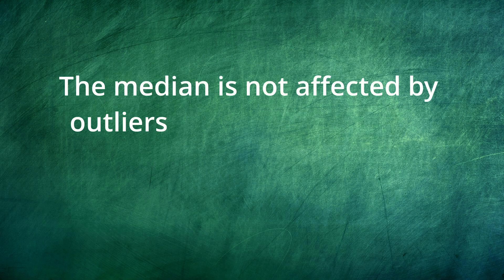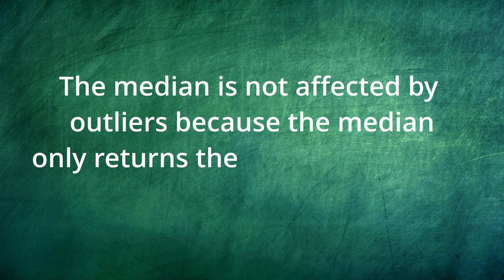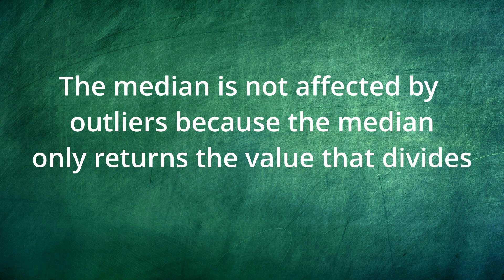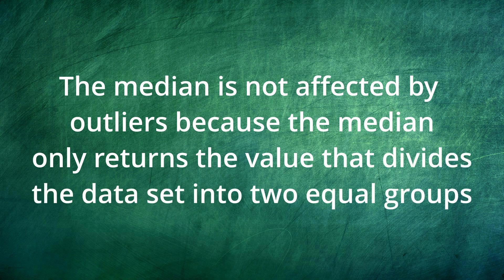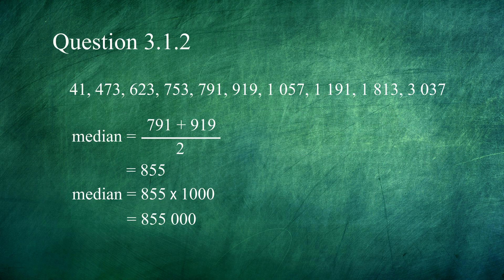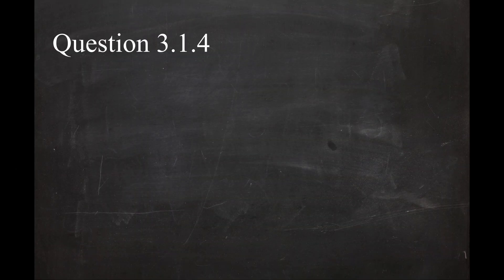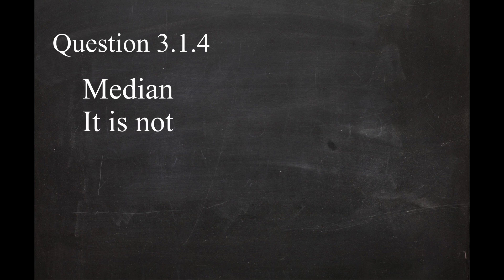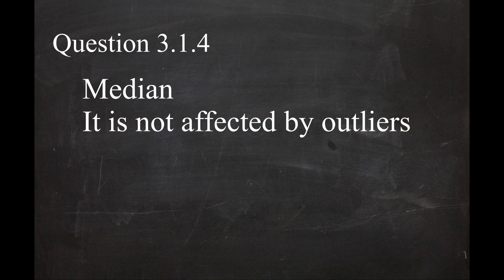The median, on the other hand, is not affected by outliers because it only returns the value that divides the data set into two equal groups. This is the median for the same data set calculated in question 3.1.2 — notice that it is not affected by the outliers. So the better measure of central tendency is the median, because it is not affected by the outliers which this data set has.